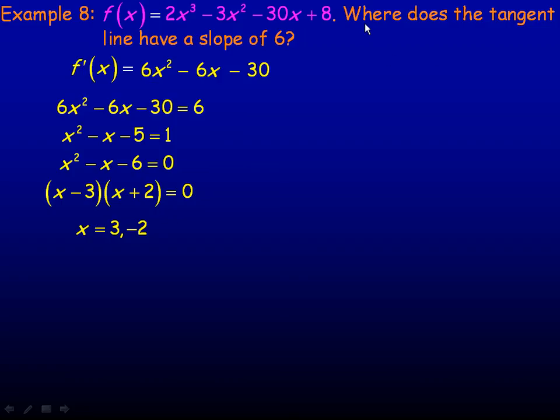Now it says where, so that infers points, so we should find the y values that go with these. So I'm going to substitute 3 and then I'll do -2. We're putting 3 back in the original function to find the y value that goes with this x value of 3. And if we evaluate that, we'll get a function value or y value of -55.